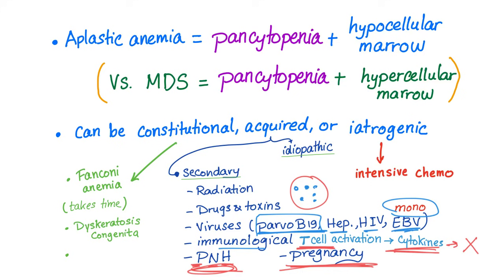How about iatrogenic causes? Intensive chemotherapy, such as treatment of cancer. So the patient has cancer, you give them chemo, and they end up with pancytopenia and aplastic anemia. That's terrible.